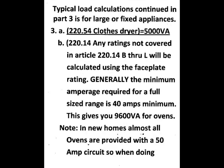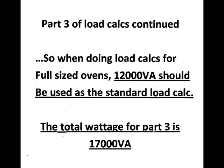Next, you'll probably have a section 3. Section 220-54 tells you that a clothes dryer is rated at 5,000 volt amps. Generally, the minimum amperage required for a full-sized range is 40 amps. However, in almost all new homes, ovens are provided with a 50 amp circuit. So when you're doing your load calcs for full-sized ovens, 12,000 volt amps should be used as the standard load calc. The total wattage for section 3 is 17,000 volt amps.